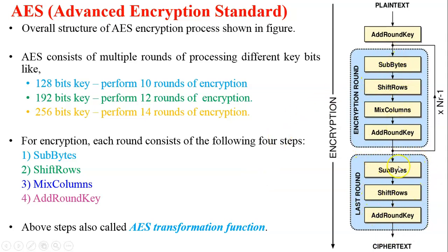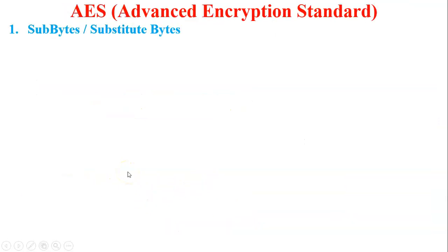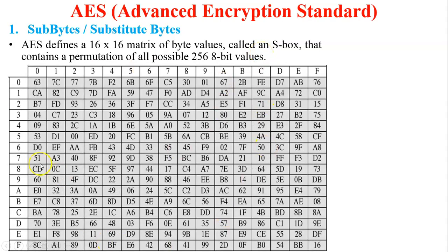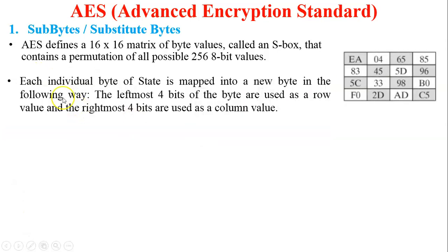Now let's discuss SubBytes. AES defines a 16×16 matrix of byte values called an S-box. You can see the S-box here — it is a 16×16 table with values from 0 to F on both the row and column axes.